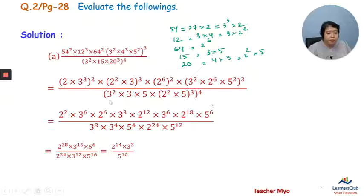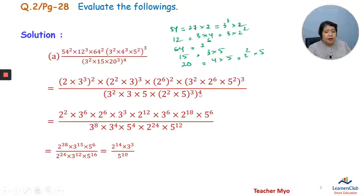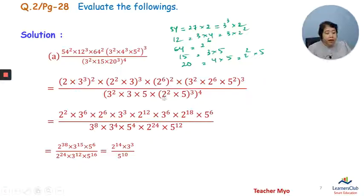If you have 3 cubed, 3 cubed times 2 squared, 3 to the power 12, 3 to the power 8, 3 to the power 4, 5 to the power 4, 2 to the power 6, 6, 4, 24. If you have 3 cubed, 3, 4 to the power 3, 5 to the power 12.